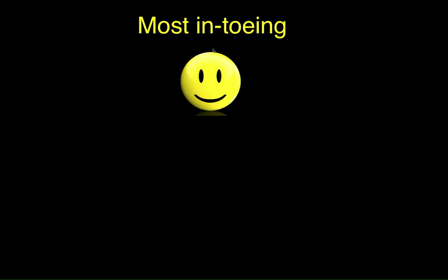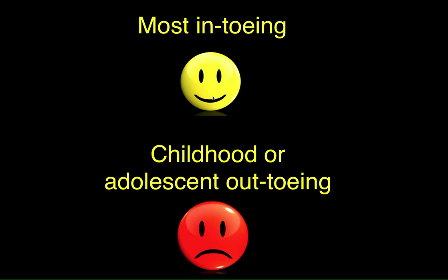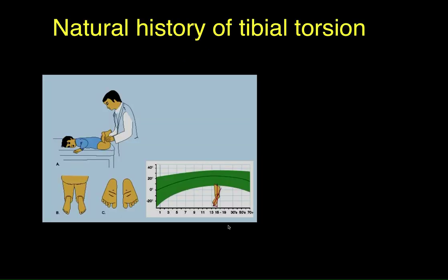Most in-toeing gets better on its own. But in childhood and adolescence, out-toeing can actually get worse with time, which is unusual for torsional problems. The reason for that is because of the natural history of tibial torsion, which we discussed before.